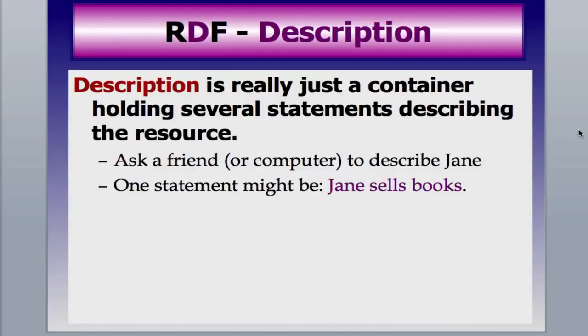The second part of RDF — the D — is Description. You can think of description as just a container holding everything together, or even holding several triplets. So if you ask a friend of a friend what Jane does, they would probably say, 'Oh, Jane — she sells books,' specifically if she knows which Jane you're talking about, which is where the URI comes in for the computer. Using RDF triplets, you could ask the same question of a computer, and it would tell you 'Jane sells books' based on the triplets stored in its database or memory or out in the network.